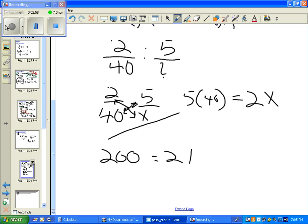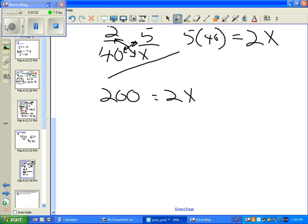And that's equal to 2x. We'll take 200 divided by 2 equals 2x divided by 2, and we'll simply get x equals 100.